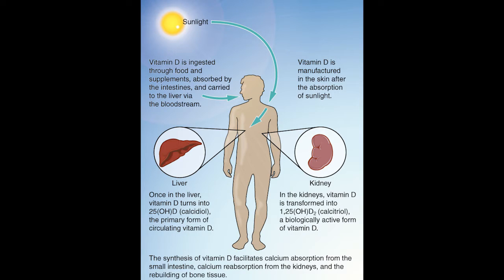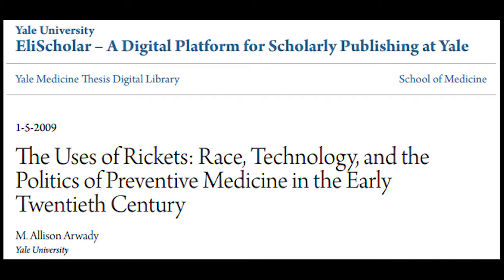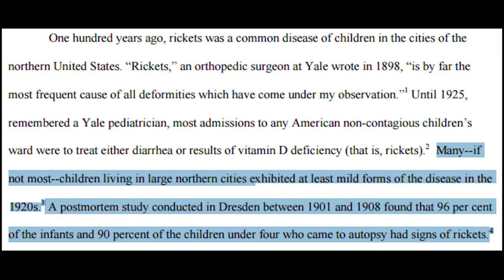What does vitamin D have to do with skin color? Vitamin D isn't found in very many foods naturally and is actually pretty tough for humans to get. Most of our vitamin D is synthesized by our body via the absorption of UVB radiation from the sun. In a 2009 article by Allison Arwadi of Yale University called 'The Use of Rickets, Race, Technology, and the Politics of Preventive Medicine in the Early 20th Century,' she demonstrated that many, if not most, children living in northern cities exhibited at least mild forms of the disease. A post-mortem study conducted in Dresden between 1901 and 1908 found that 96% of infants and 90% of children under four had signs of rickets. Between 1918 and 1928, scientists discovered that the primary cause of rickets was a vitamin D deficiency, and we ended up getting vitamin D fortified foods like milk, which mostly solved the issue.